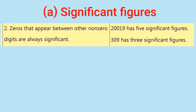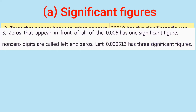Rule number 2: Zeros that appear between other non-zero digits are always significant. Example: 20019 has 5 significant figures. 309 has 3 significant figures.